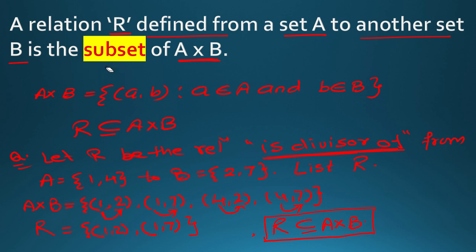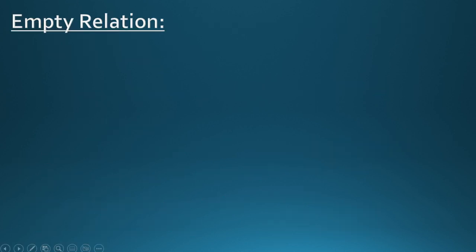There are two types of conditions. Maybe no ordered pair will satisfy any condition — in that case no ordered pair belongs to R, meaning R will be blank. That type of relation is called empty relation — R is equal to the empty set (φ).